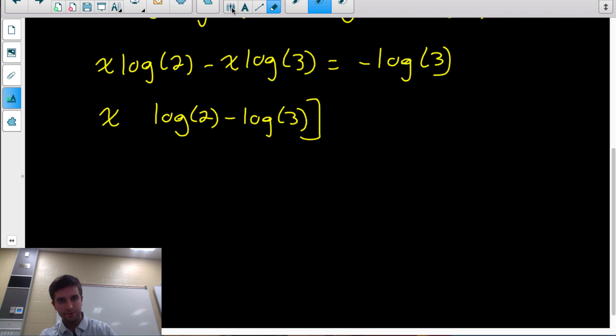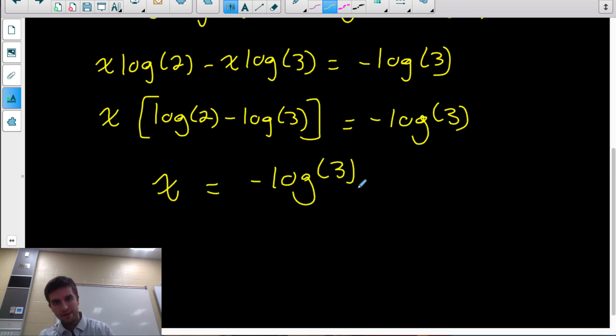I'll change this one to a square bracket so you can more easily see what I have here. Equals negative log 3. And now we're almost done, x is almost by itself. Just divide both sides by this number here, by whatever log 2 minus log 3 is. So divide the log 2 minus log 3 to the other side. And we get x equals negative log 3 divided by (log 2 minus log 3).